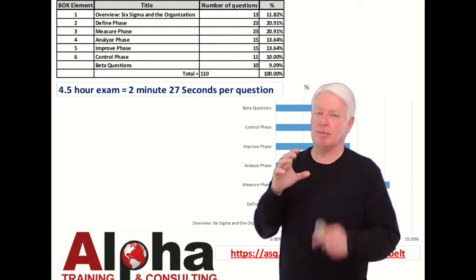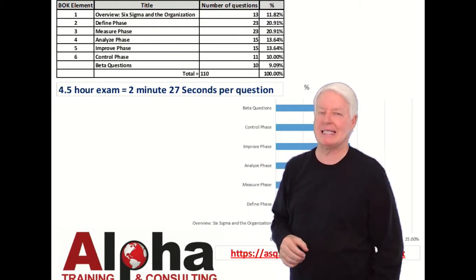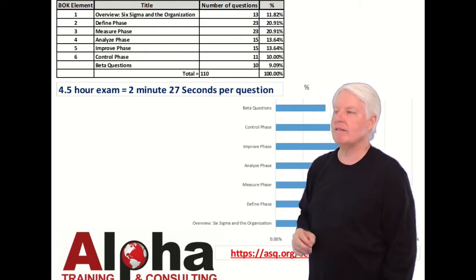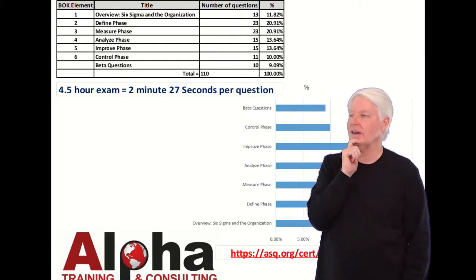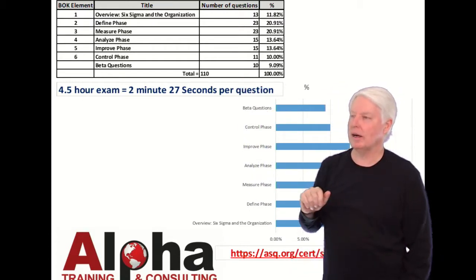First of all, ASQ takes the Body of Knowledge and breaks it up into six categories. So we'll review that, and I'll go over also how many test questions are on the test on that part of the Body of Knowledge.